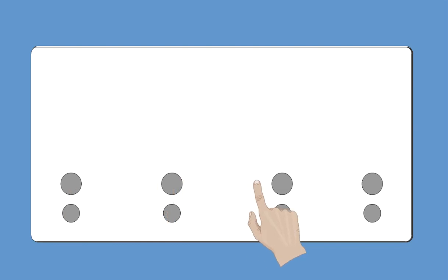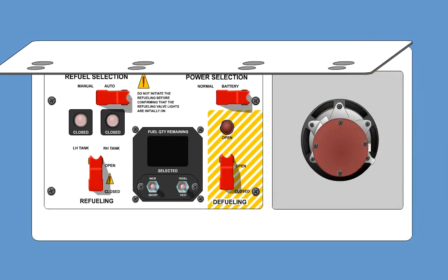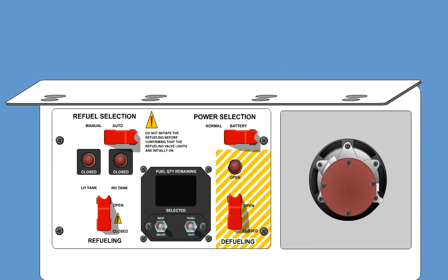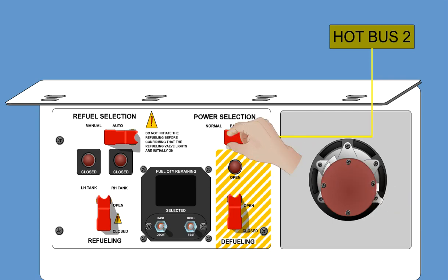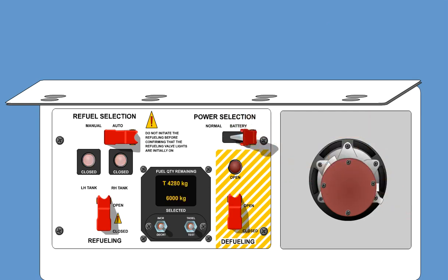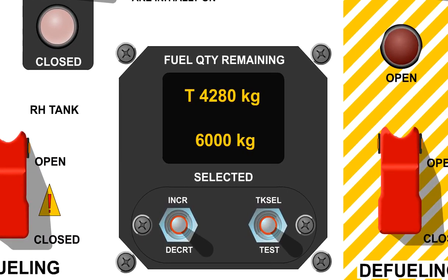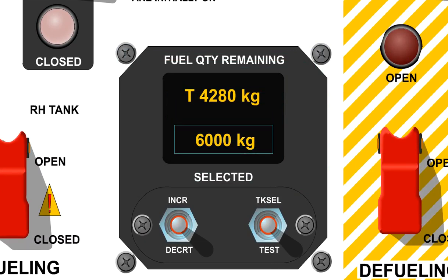The refuel-defuel control panel provides control and monitoring facilities for refuel and defuel shut-off valves, as well as power selection. When the access panel door is open, the compartment will be illuminated automatically and on the ICUS a fueling door open message will illuminate. If the aircraft is not electrically powered, the system can be connected to the hot bus by selecting the power selection switch to battery. Refueling can now be performed either manually, bypassing the fuel conditioning unit, or automatically. The refueling valves can be controlled by the refueling switch and monitored via the two refuel shut-off valve closed lights. The refuel-defuel indicator has a two-line, eight-character display, which displays the fuel quantity on the upper display and the pre-selected quantity on the lower display during automatic refuel.